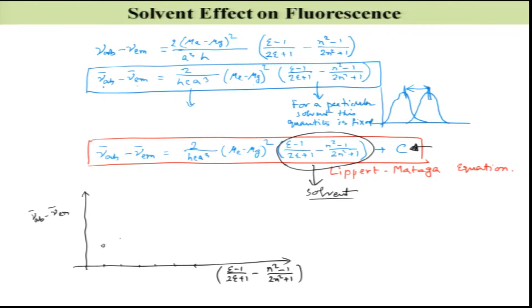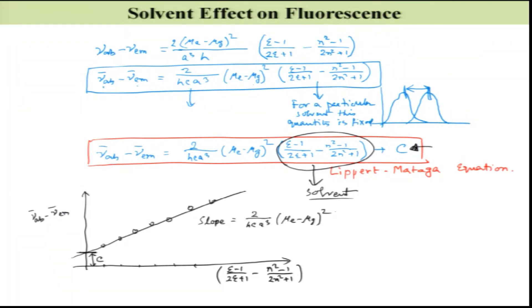I will get different data points that correspond to a straight line, where the intercept equals C (the inherent Stokes shift from vibrational relaxation), and the slope equals (2/hca³)·(μe − μg)². Since h, c, and a³ are fixed constants, the slope directly gives (μe − μg)². This means if you know the ground state dipole moment, you can calculate the excited state dipole moment, and vice versa.